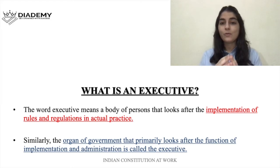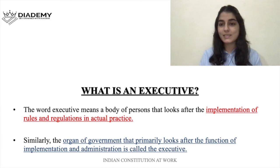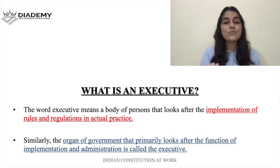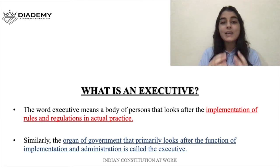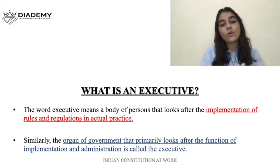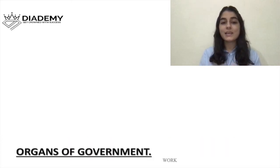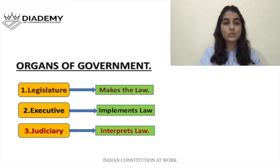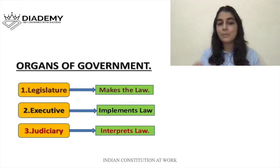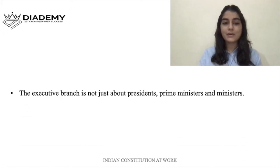Let's understand this with an example. Suppose the legislature made a law that everyone has to walk on the left side of the road. This law was made by the legislature, or parliament. Now someone has to check whether people are following it or not — what about those people who are not walking or driving on their left side? That implementation is taken care of by the executive. Legislature makes the laws, executive implements the law, and judiciary interprets the law.